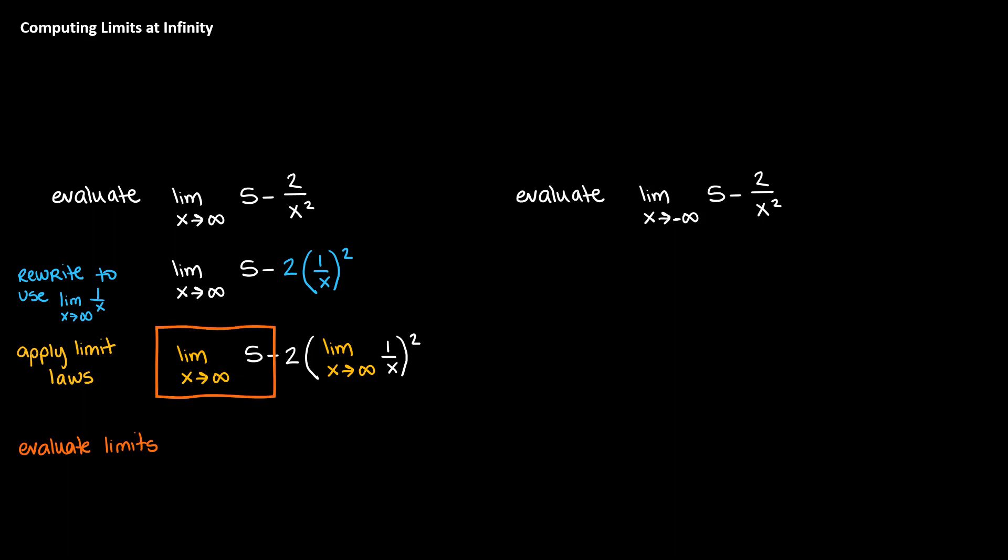That way we can apply our limit laws, and then we can see the limit of x traveling towards infinity for the function 1 over x, what we just discussed. Evaluating each of these limits, we see that we have a limit of a constant. We know that limits of constants are equal to that constant. It doesn't matter where x is heading, so that limit is equal to the constant 5. The other limit involves that function 1 over x. We know that as x is traveling towards positive infinity, that function is tending to 0. So the second limit would be 2 times 0 squared. And if we combine these using the difference, since our limits were being subtracted from each other, we would have 5 minus 0. So our limit for this function as x goes to positive infinity is equal to 5.